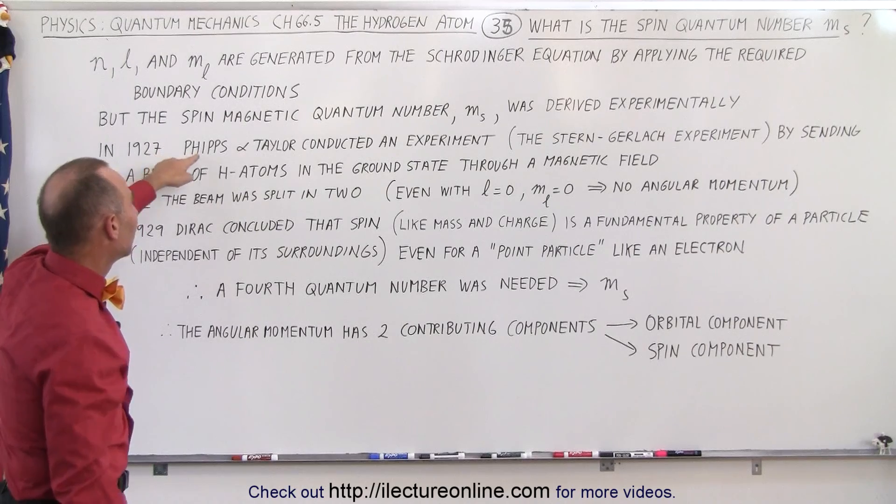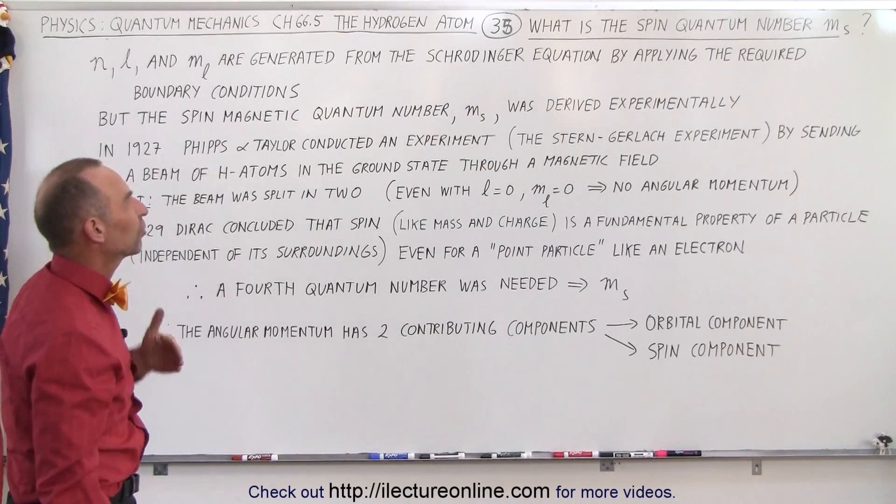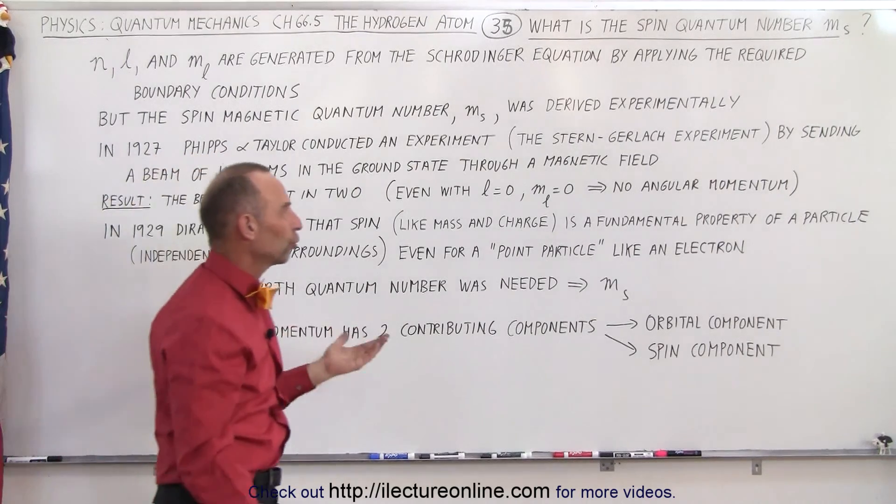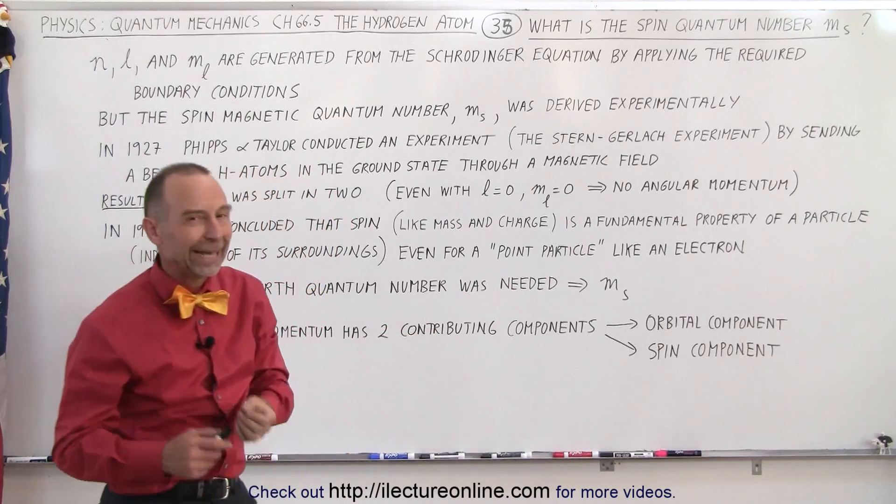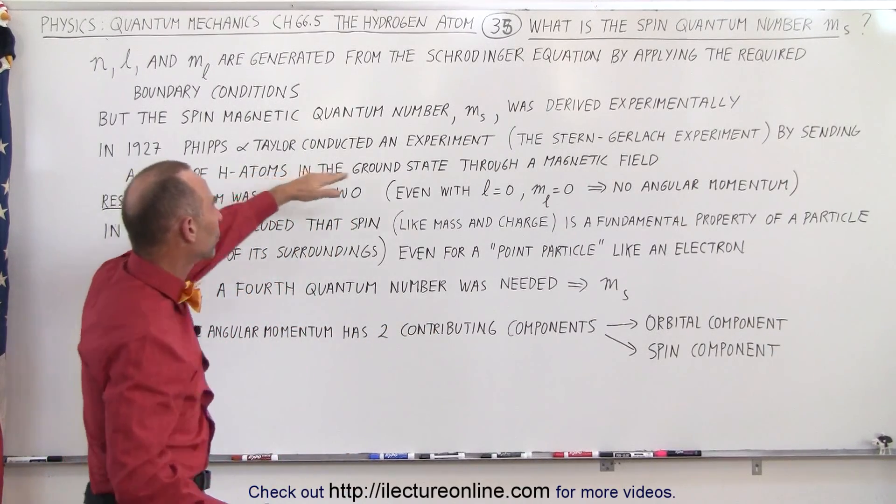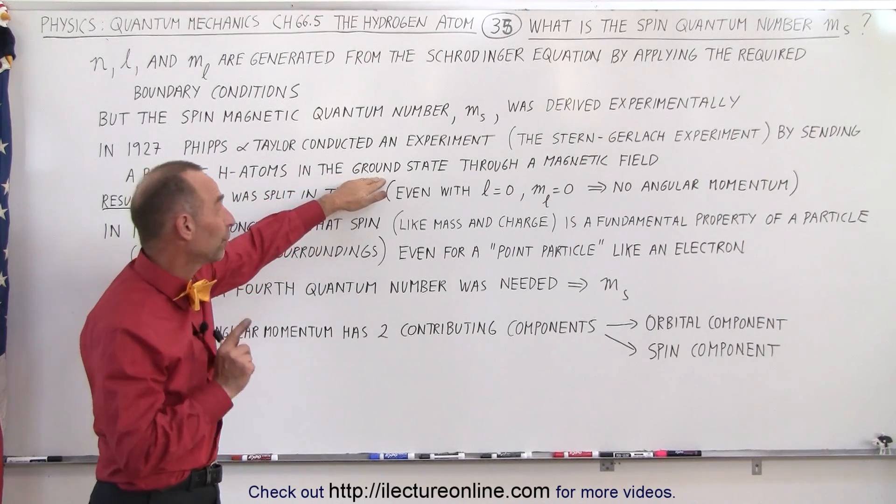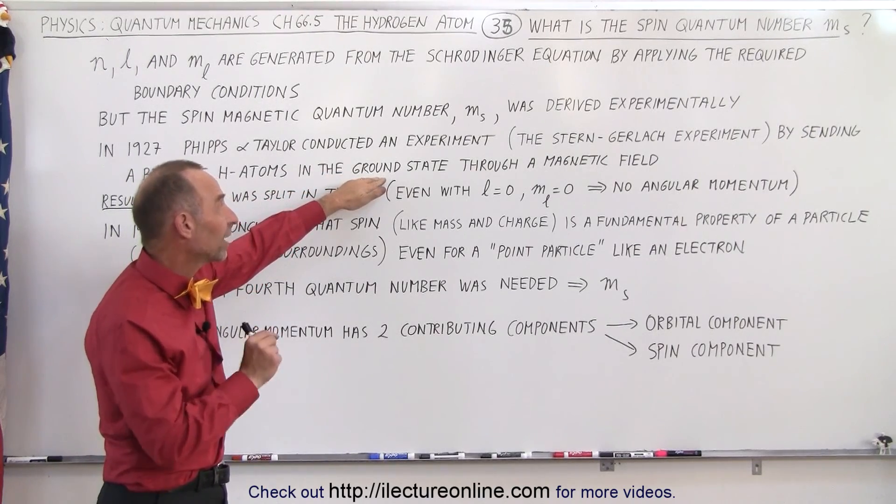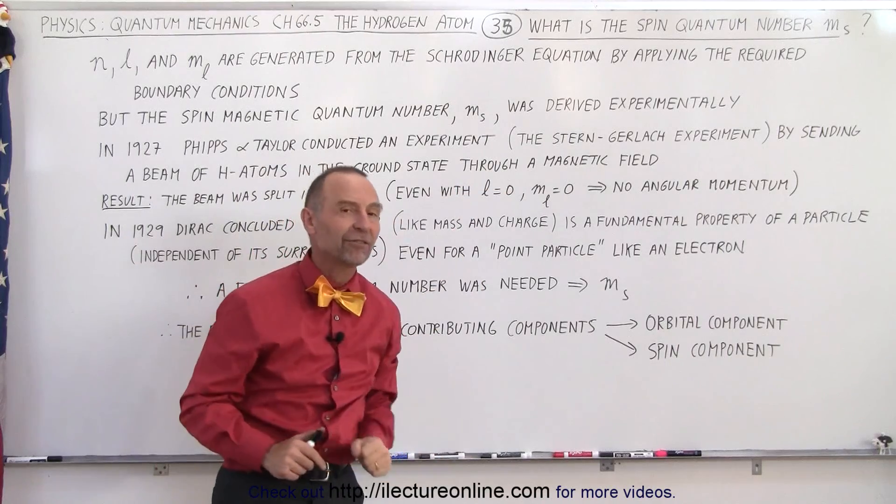in 1927, Phipps and Taylor conducted an experiment which is now known as the Stern-Gerlach experiment. And they did so by sending a beam of hydrogen atoms in the ground state through a magnetic field.